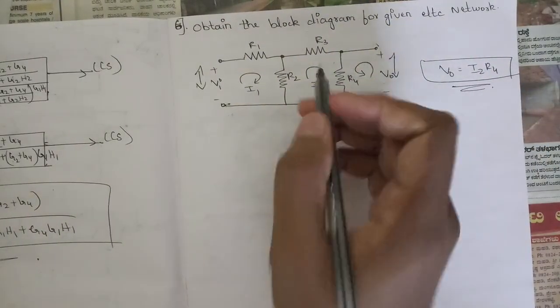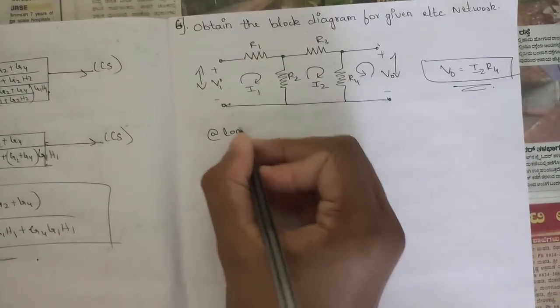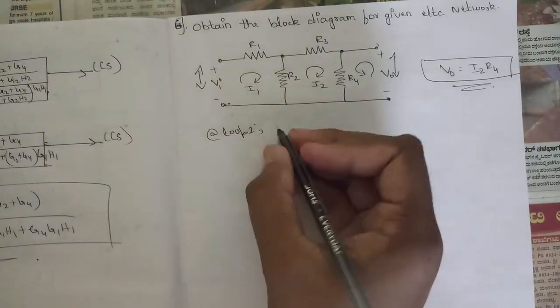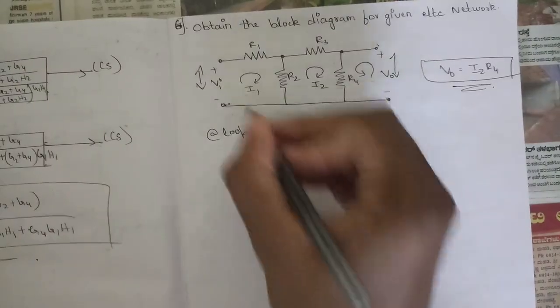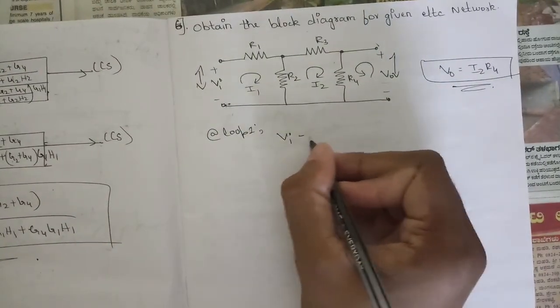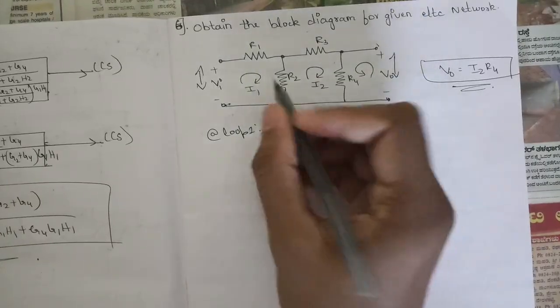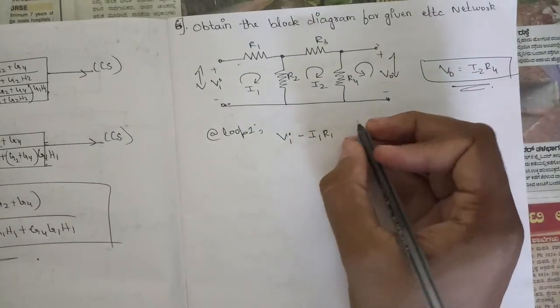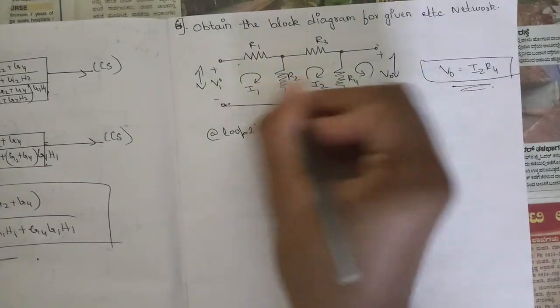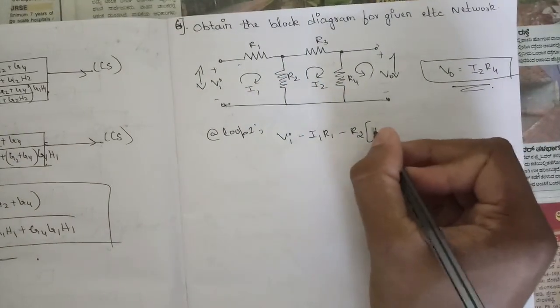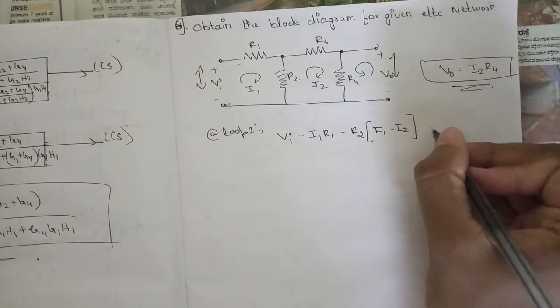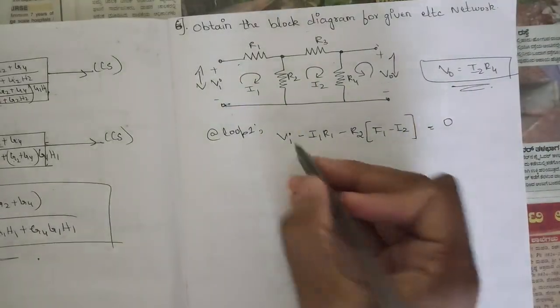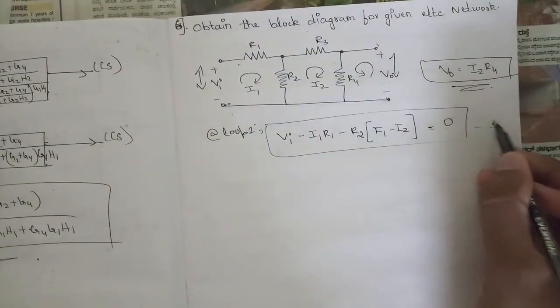For loop 1, the equation we get is: Vi minus I1·R1 minus (I1 minus I2)·R2 = 0. There are two currents in R2, that is I1 minus I2. This is equation 1.